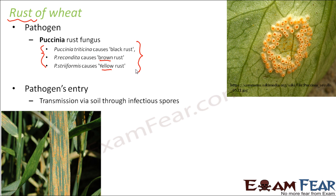The pathogen enters via soil through infectious spores present in the soil. Plants receive all their nutrients from the soil, so through that means they also receive these infectious spores. In the picture you can see how exactly it looks — on the leaves of a wheat plant you can see the rusted structures, which are due to the presence of this fungus.